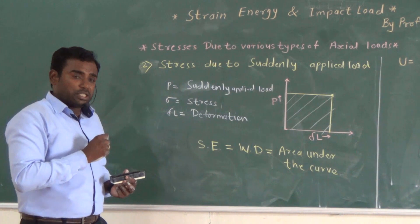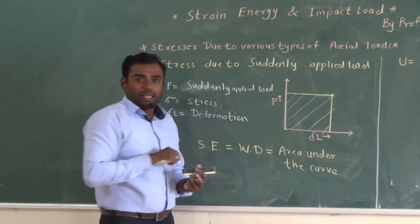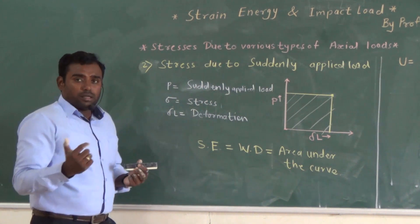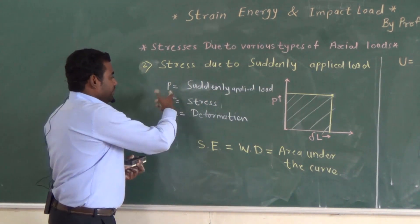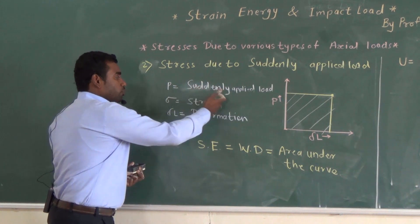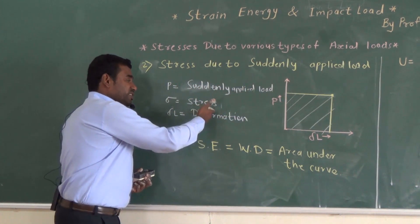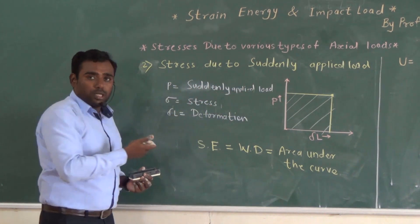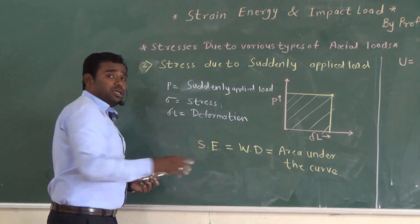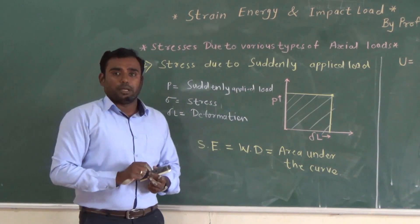Here there is a sudden application of load and a sudden deformation, so the graph will look like this. Now I will introduce some terms: P is equal to the suddenly applied load, sigma is nothing but the stress induced in the body due to the suddenly applied load, and delta is the deformation of the body due to the suddenly applied load.